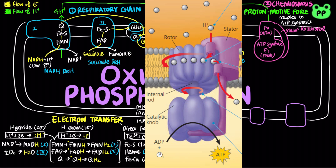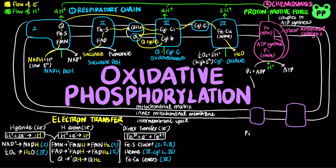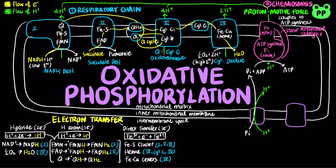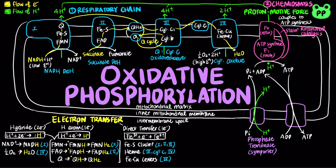Inorganic phosphate is imported into the mitochondrial matrix by a symporter known as phosphate translocase, driven by the simultaneous transfer of protons into the matrix. The transfer of ADP into the mitochondrial matrix is coupled to the transfer of ATP out of the matrix by an antiporter known as adenine nucleotide translocase.